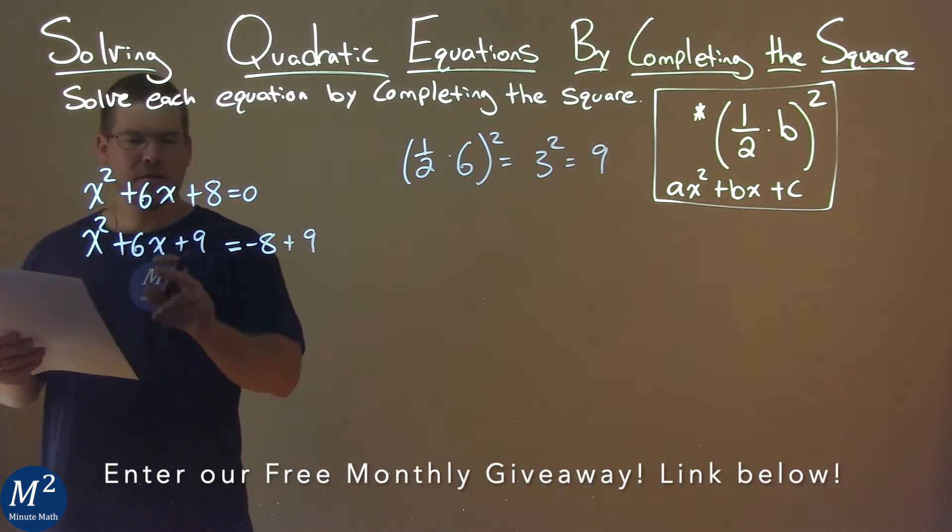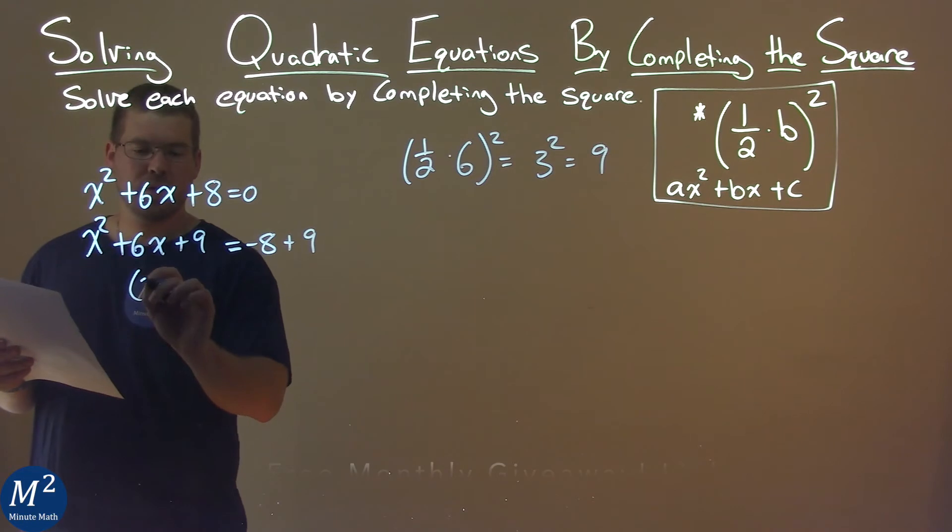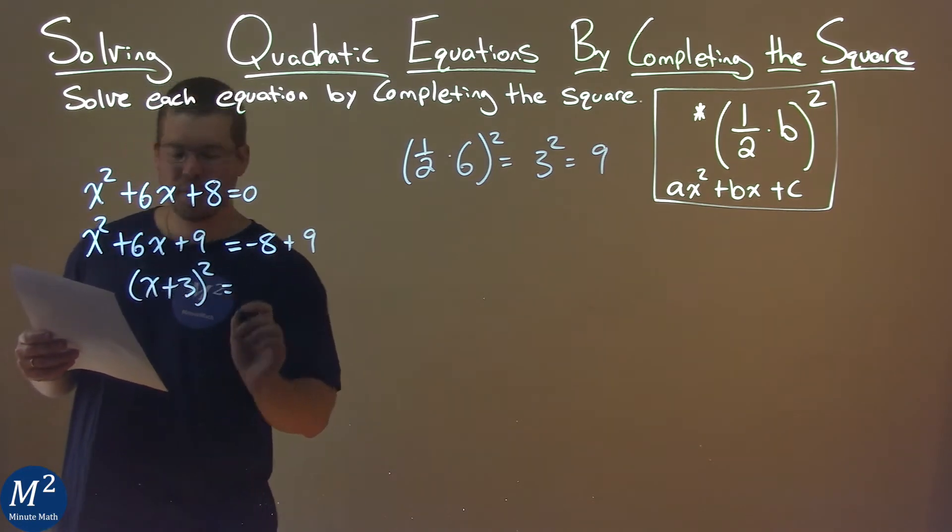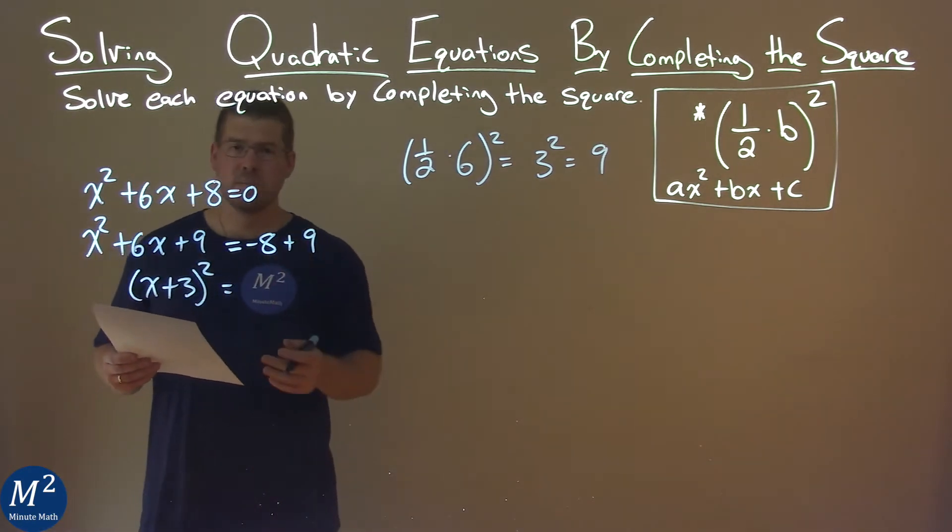Now, from here, the left-hand side is a perfect square. x plus 3, all squared. The right-hand side, negative 8 plus 9 is 1.